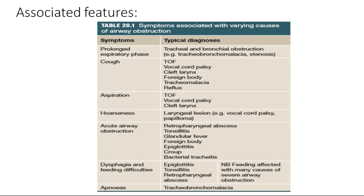Hoarseness is mostly due to a laryngeal lesion — whenever there is glottic involvement, it can lead to hoarseness. Acute airway obstruction can be due to retropharyngeal abscess, tonsillitis, glandular fever, foreign body, epiglottitis, croup, and bacterial tracheitis. Dysphagia and feeding difficulties can be due to epiglottitis, tonsillitis, and retropharyngeal abscess. Newborn feeding is affected by many causes of severe airway obstruction. Apnea is mostly due to tracheobronchomalacia.